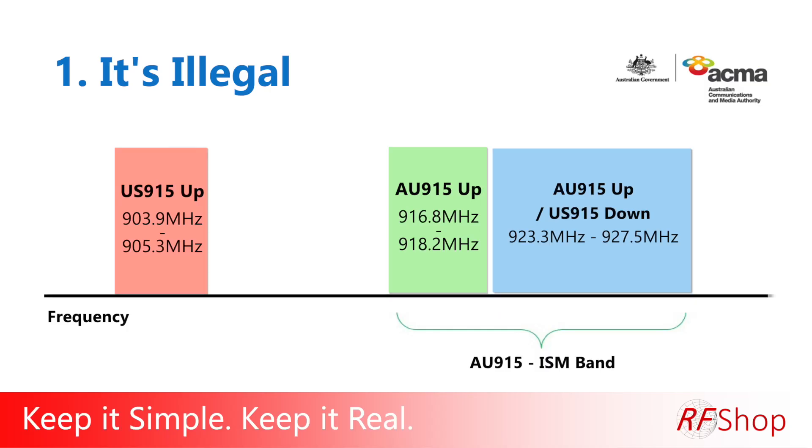The AU 915 Australian band is slightly different. The top downlink block is exactly the same — 923 to 928 MHz — but the uplink is totally different: in Australia it's 916 to 918 MHz. By law, ACMA does not allow you to transmit LoRaWAN or ISM in the low band. Below 915 MHz in Australia you're not allowed to use it. So there's activity in US 915 that falls completely outside the frequency block allocated in Australia for this application.